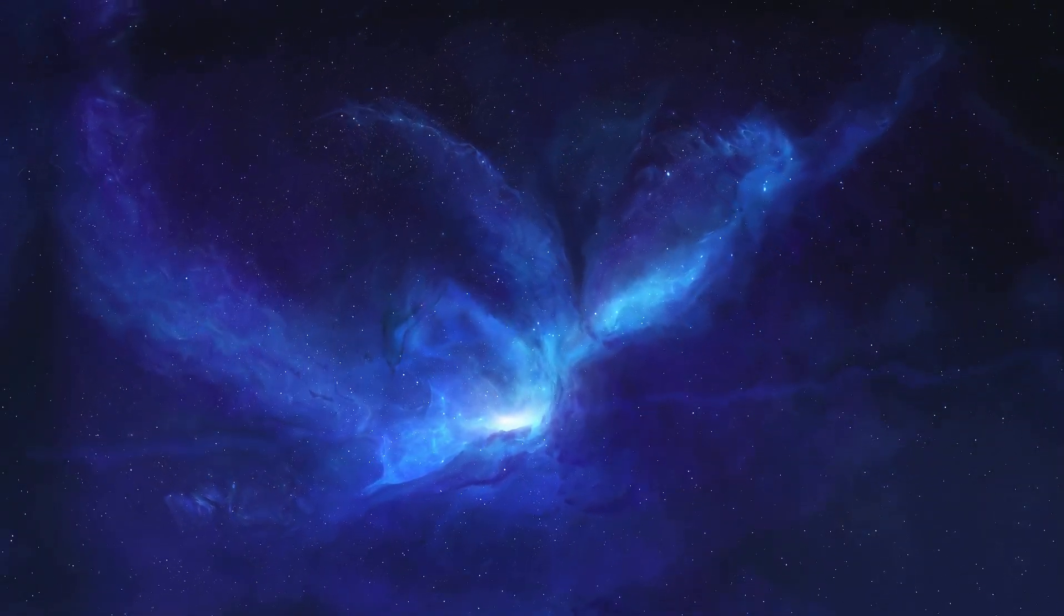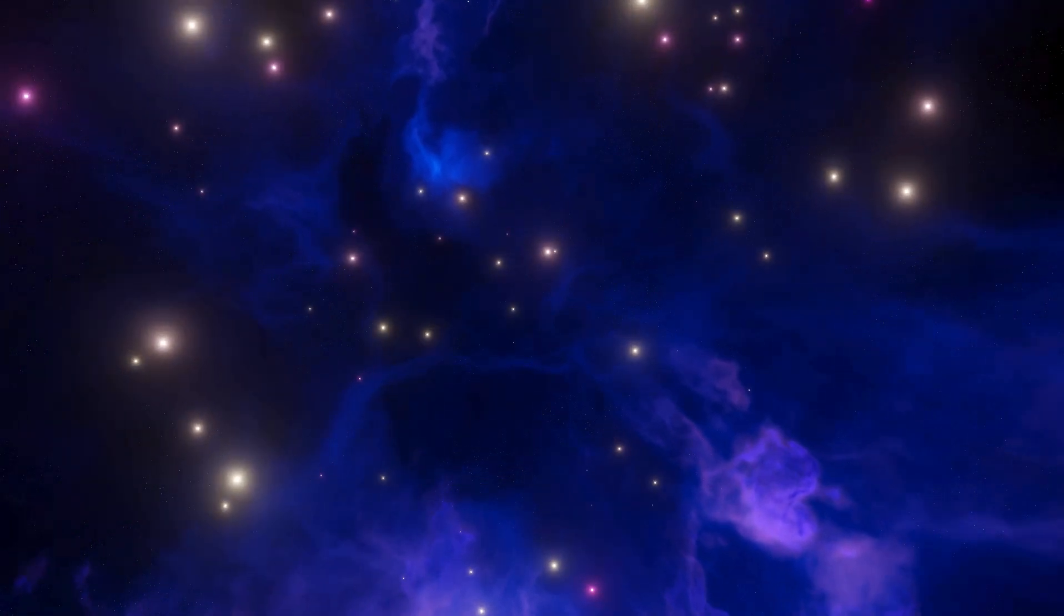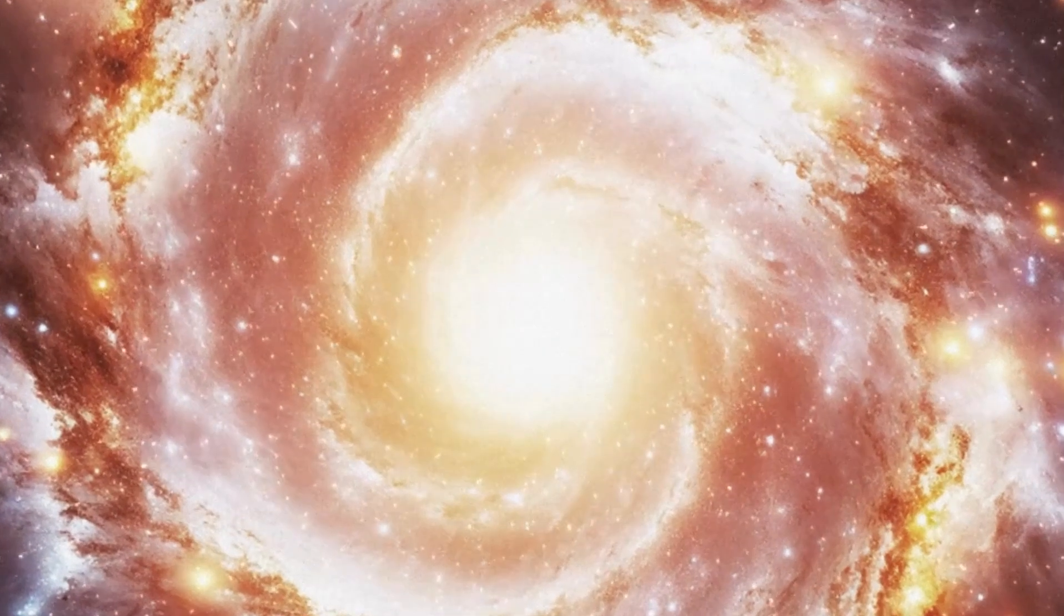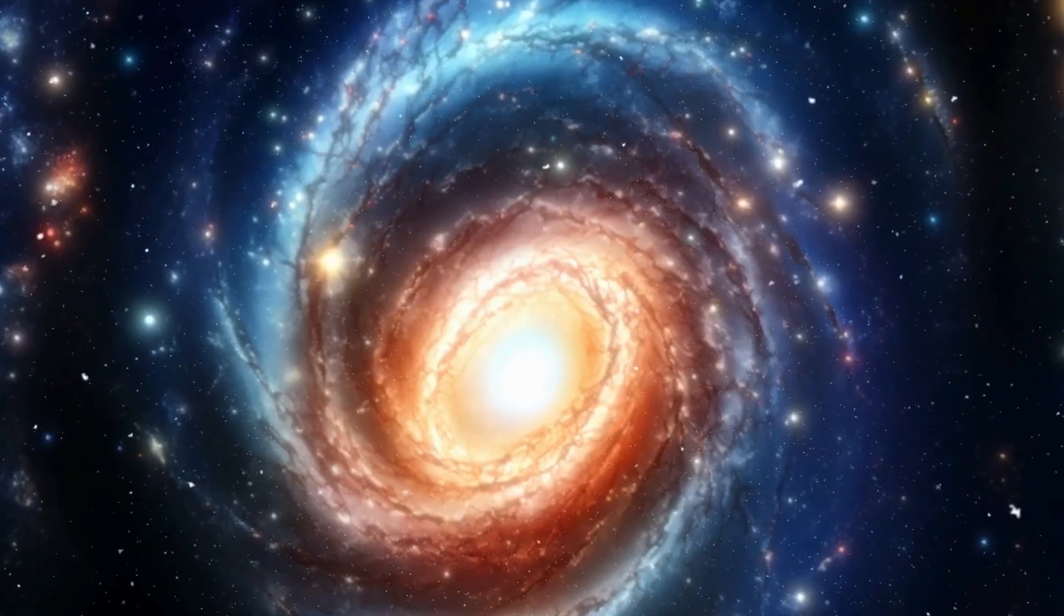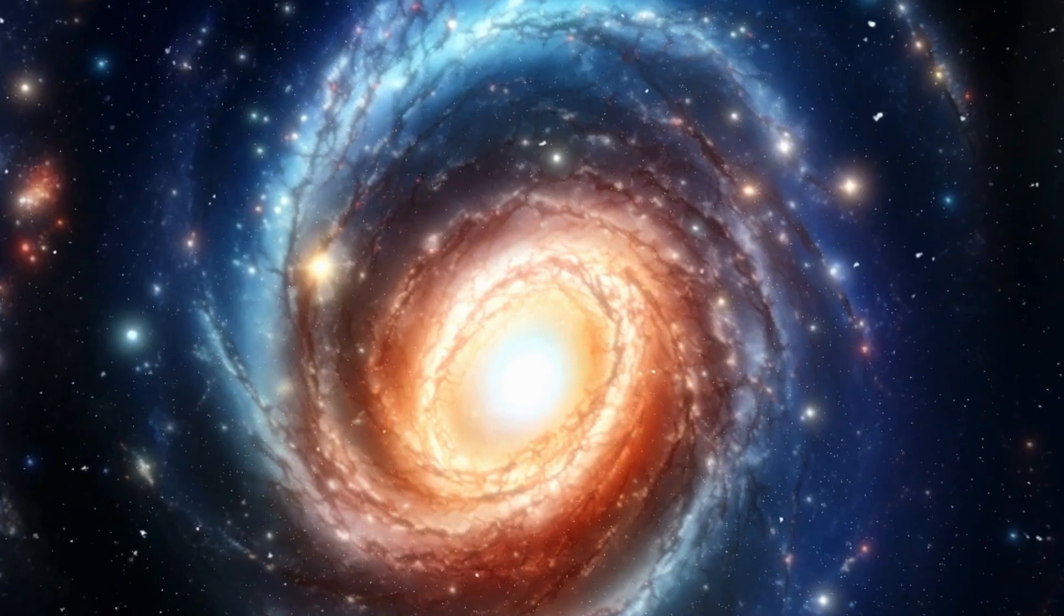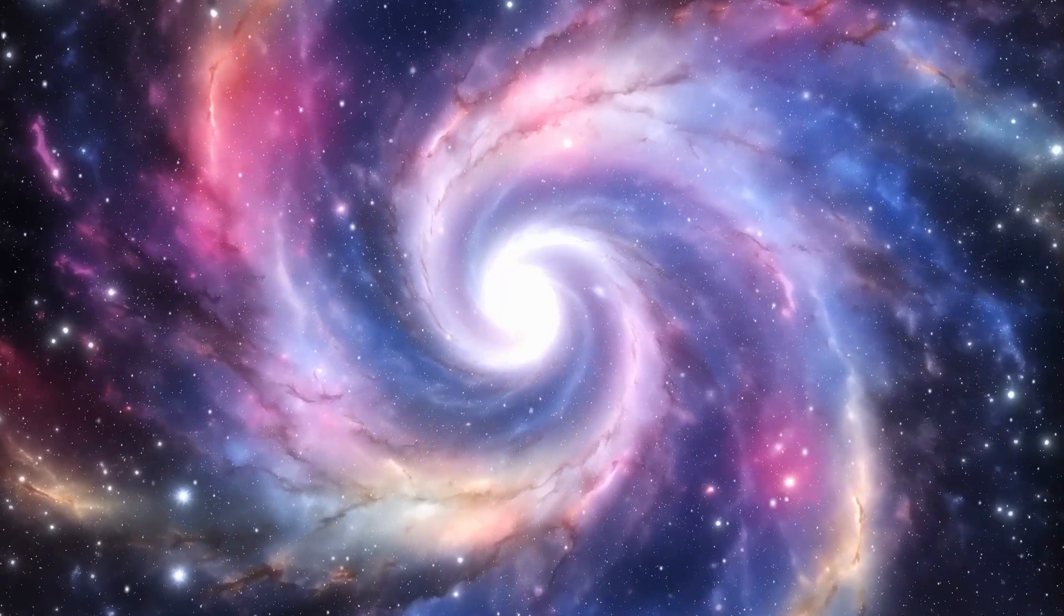In a distant corner of the cosmos, roughly 200 light-years away, an ancient star called HD140283 resides near the Libra constellation. This stellar traveler moves briskly through space, offering intriguing glimpses into its tumultuous past.